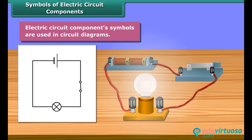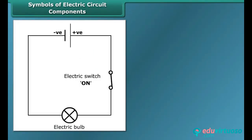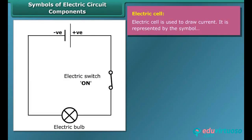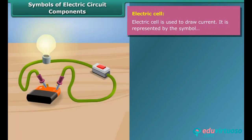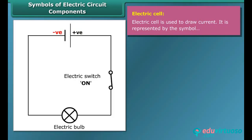This is the symbol of a switch in the on position; this one is in the off position. An electric cell is a simple device which is used to generate electricity. Electricity is produced by chemical reaction. It has a positive terminal and a negative terminal. In the symbol of the electric cell, the longer line represents the positive terminal and the thicker, shorter line represents the negative terminal.